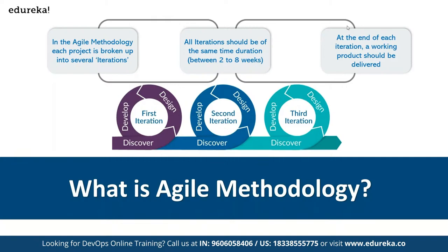The second improvement was the time frame. In waterfall, customers waited six months to a year. In agile, we deliver the product after every sprint — much faster turnaround to business requirements. Agile was very good for developers — it talked about how to make development life easy and how to engage developers through different phases of the development life cycle.